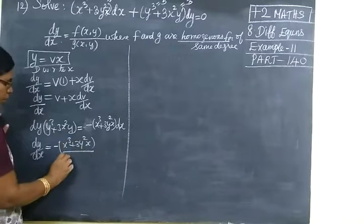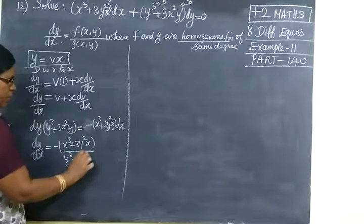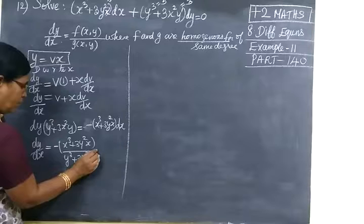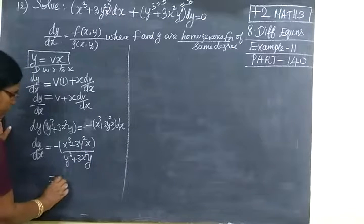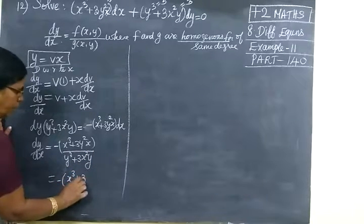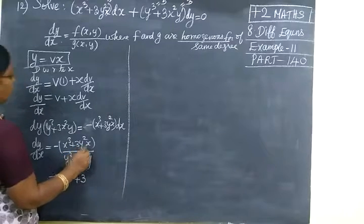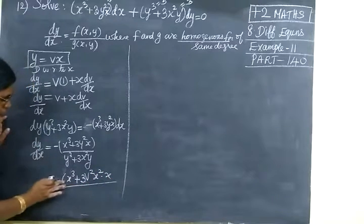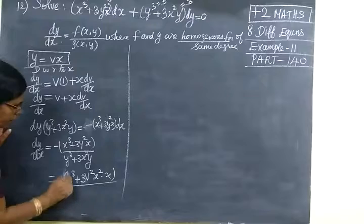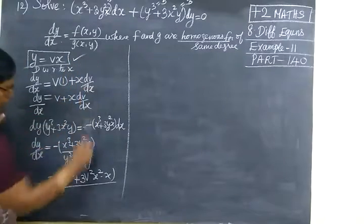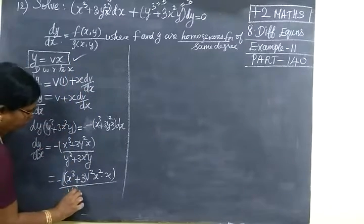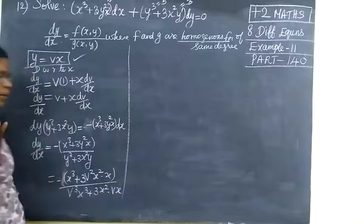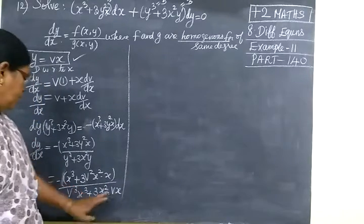We want to get the form dy by dx. Then: minus x cubed plus 3y squared r. The y term gives the type y cubed plus 3x squared y. Wherever y you have, you change it as vx. So this can be written as minus x cubed plus 3v squared x squared r by denominator. For y you are substituting vx, so v squared x cubed plus 3x squared r. For y you are substituting vx.